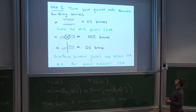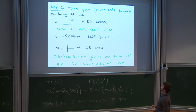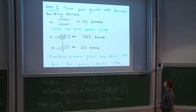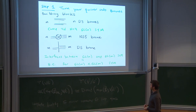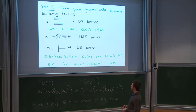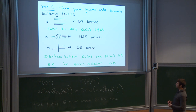Let me describe the building block branes — this is purely a dictionary. These horizontal lines, if you have a stack of n of them, are called D3 branes. The important thing is that they carry a copy of 4D N=4 super Yang-Mills with gauge group GL(n), which is the theory that geometric Langlands is all about. The other two building blocks are called the NS5 brane and the D5 brane, which are interfaces between GL(n) and GL(m) super Yang-Mills.